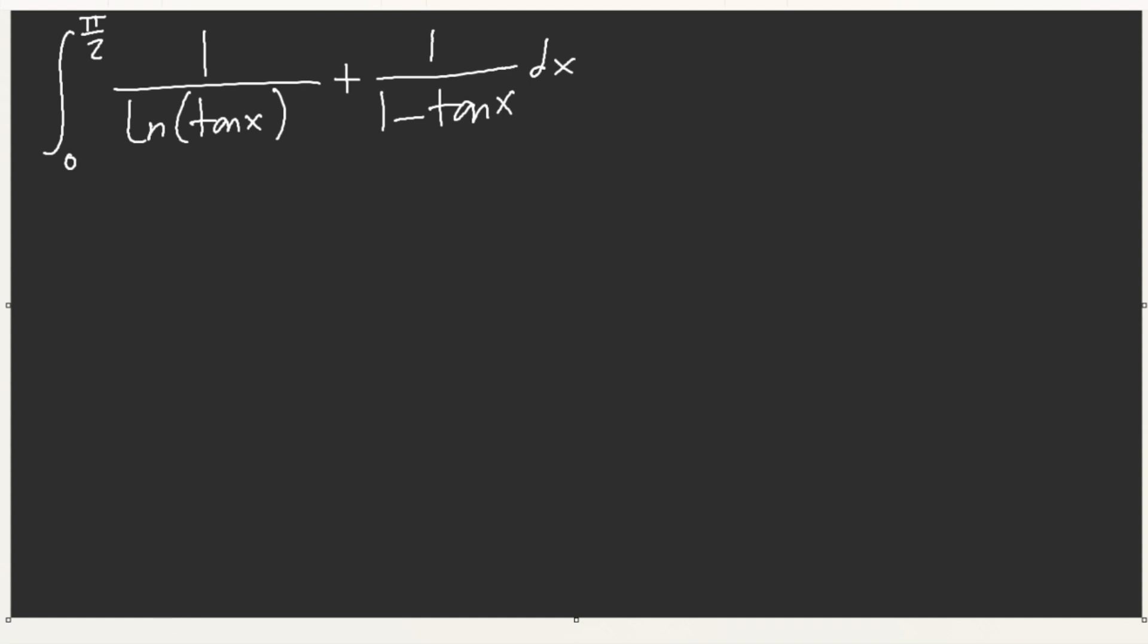Okay. This is our last integral for this section. So, how do we solve this problem here? Well, let's see. I see a bunch of tangents instead of pi over 2. If we try Queen's rule, if we use Queen's rule, we get ln of cotangent of x plus 1 over 1 minus cotangent x.